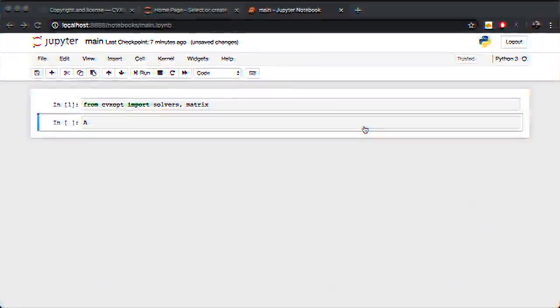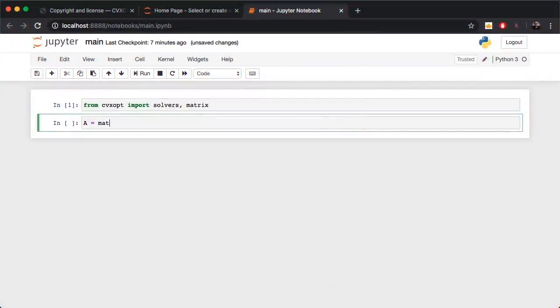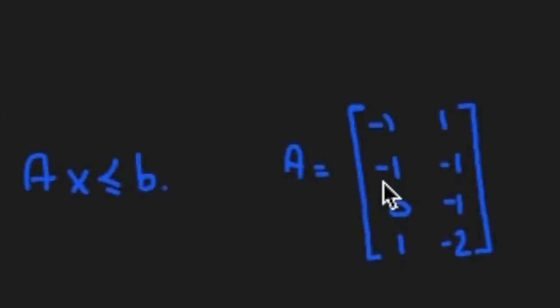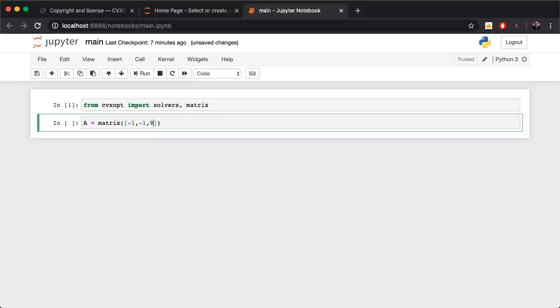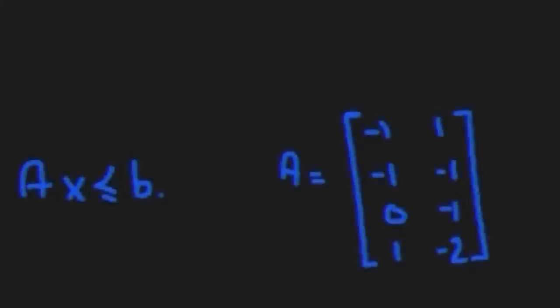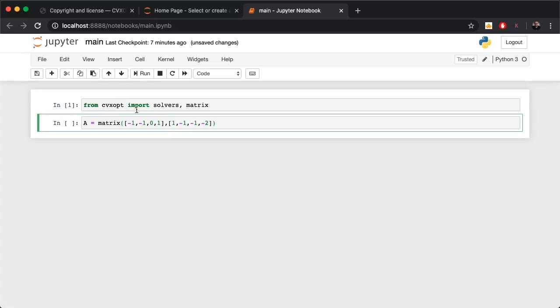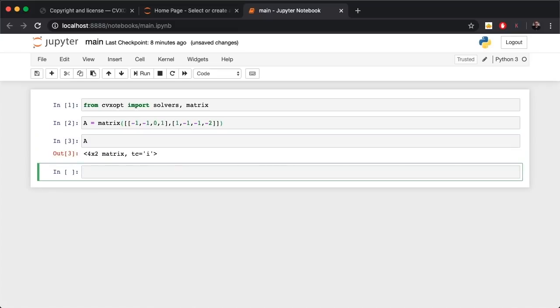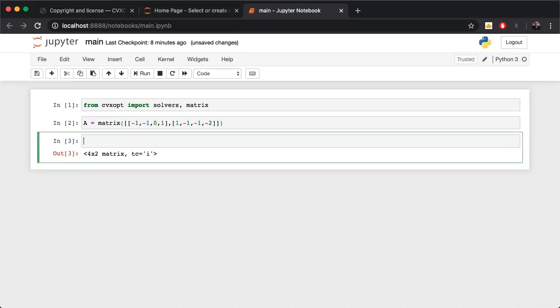What I want to do right now is just copy my A, b, and c. Let's copy A. The way you can do this is simply by calling matrix, then packing in the first column of A which is -1, -1, 0, and 1, along with the second column that is 1, -1, -1, and -2. Don't forget a second bracket to say that those two columns are actually in a matrix.